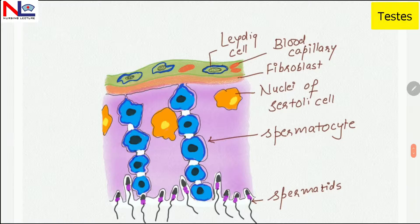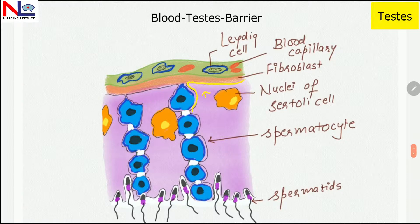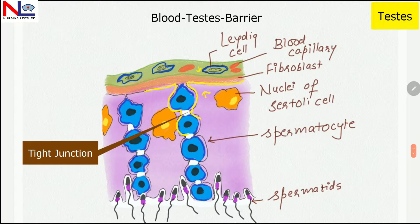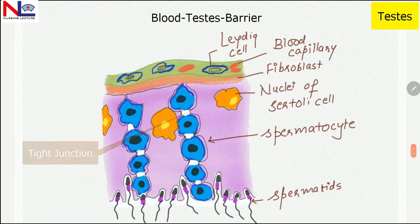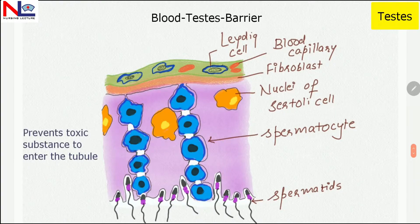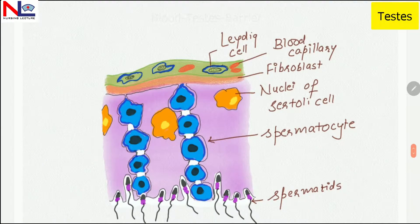The Sertoli cells also form a blood-testes barrier — a physical barrier between the Sertoli cells and the blood vessels. These Sertoli cells are joined together by tight junctions. The Sertoli cells help prevent toxic substances from entering the seminiferous tubules, which could damage the sperm cells.